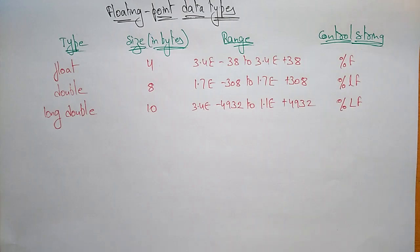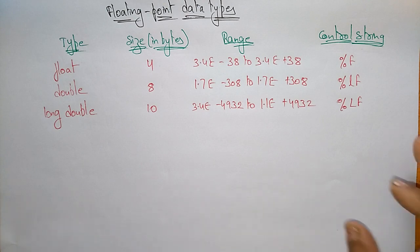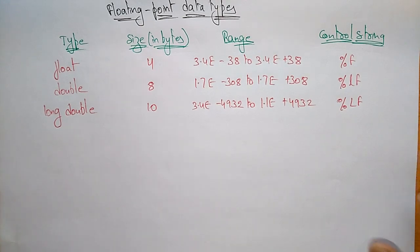Hello students, let us continue with the primitive data types. In the previous video I explained about the integer data type and the ranges for different integer data types: short int, long int, and the signed and unsigned int. I also explained about the character data type, the signed and unsigned characters, and what are the control strings and the range and size of the character data type.